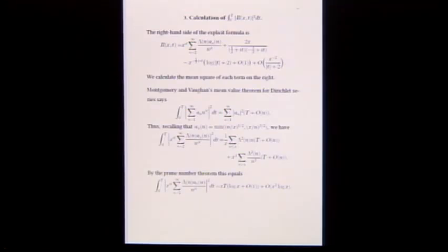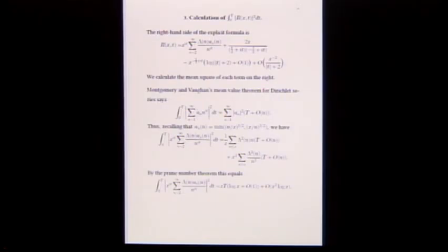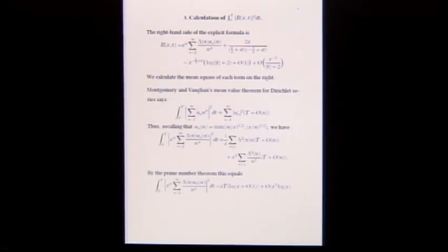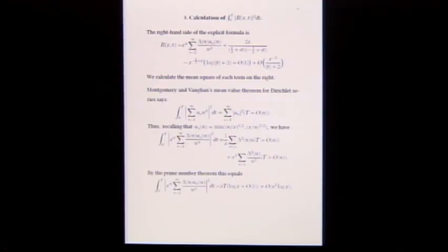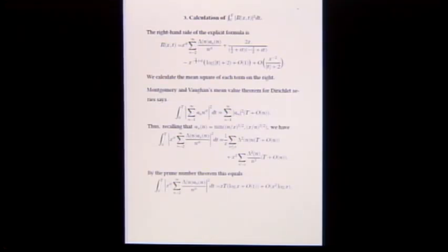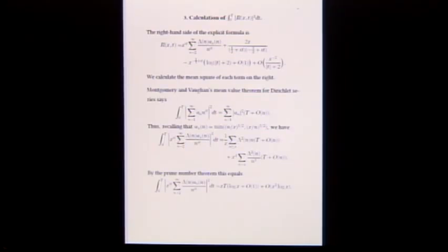You can compute things like this using the prime number theorem, since psi of x equals sum of lambda n. By partial summation you can handle lambda n times n, lambda n over n squared, and lambda squared — all in a reasonable way. So by the prime number theorem we can evaluate this and get a main term plus error terms.